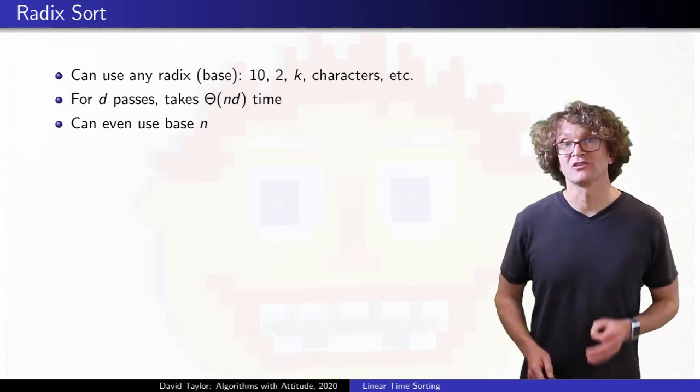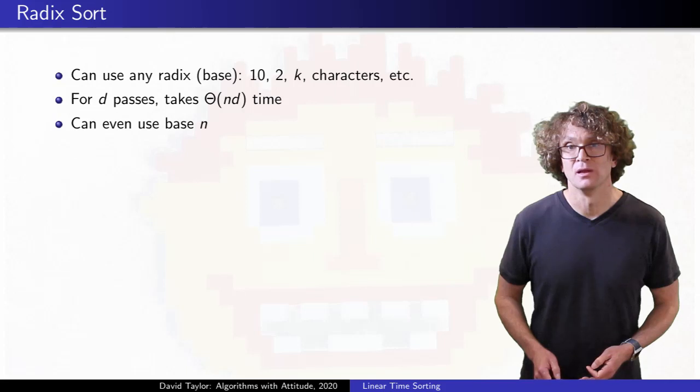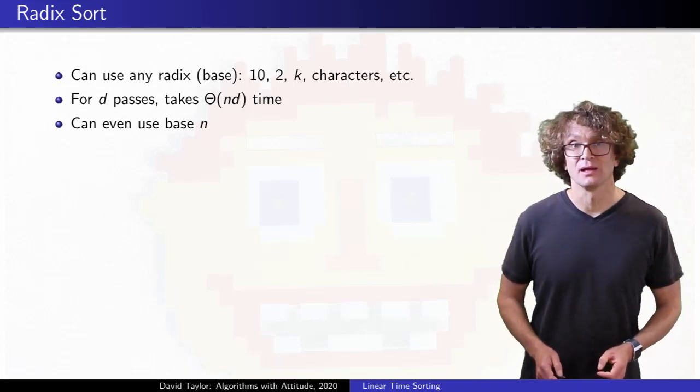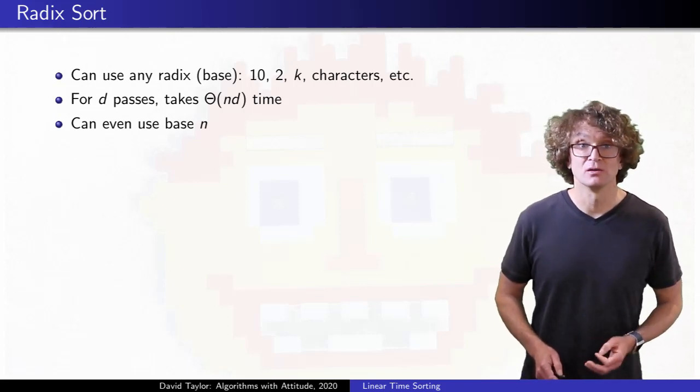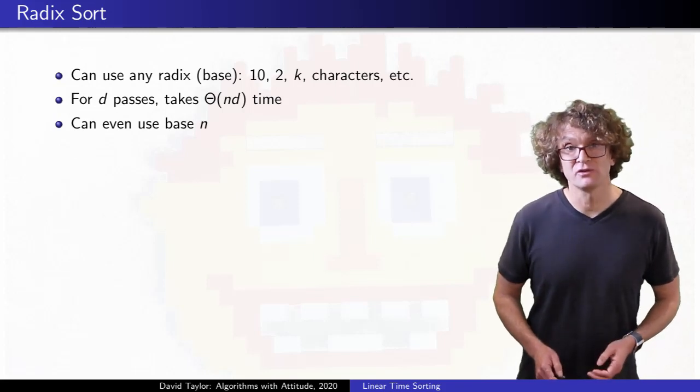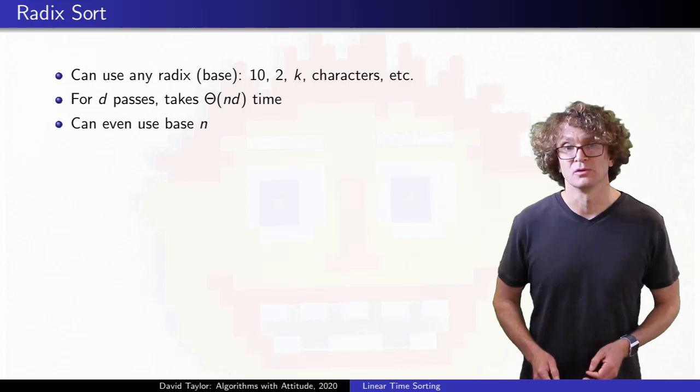That example shows how radix sort expands the class of inputs that you can sort in linear time. But it is still going to be best at handling something like limited integers or strings, so it is still not as general a sort as quicksort. It also uses extra space compared to quicksort, which could limit its performance for large enough inputs.